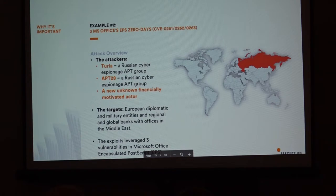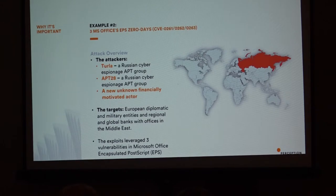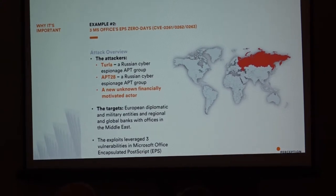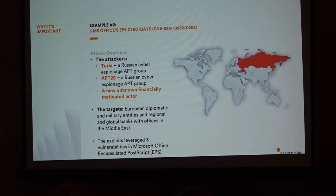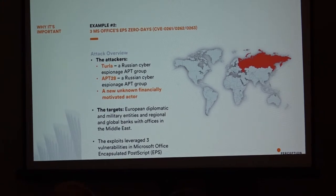Another example of memory corruption: the Russian cyber espionage group APT28 found memory corruption vulnerabilities in Microsoft Word in the font parsing mechanism. They sent you a document, you double-clicked it, and it ran code on your machine. This was very advanced — it involved three vulnerabilities: two for Word and one for the Windows kernel, to gain access to the operating system and install themselves. Whoever wrote this was clearly a team of highly skilled people.